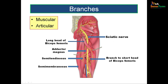The branches to the four hamstring muscles arise from the medial side of the sciatic nerve and carry fibers from the tibial component. Only one branch arises from the lateral side, supplying the short head of biceps femoris and carrying fibers from the common peroneal component. Therefore, the lateral side of the nerve is considered the safer side, as the maximum number of branches arise from the medial side.